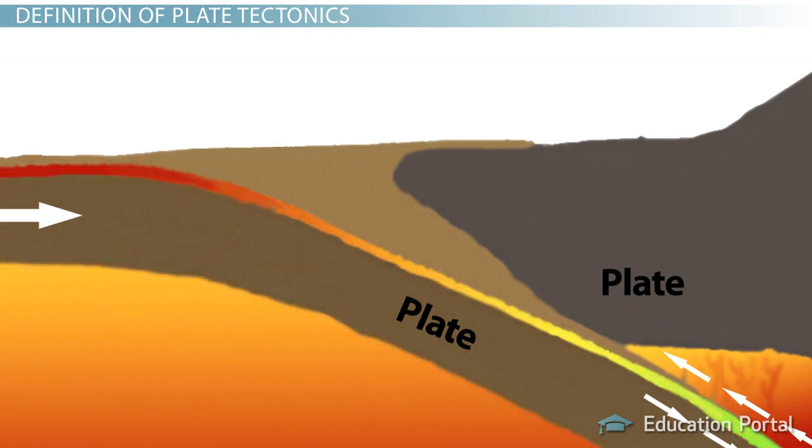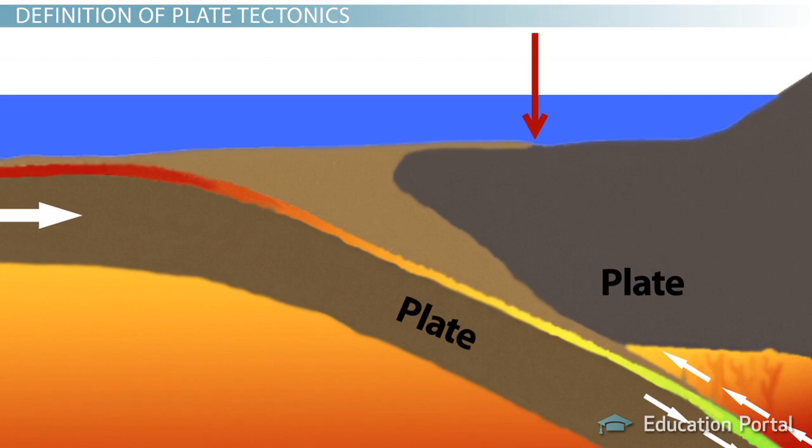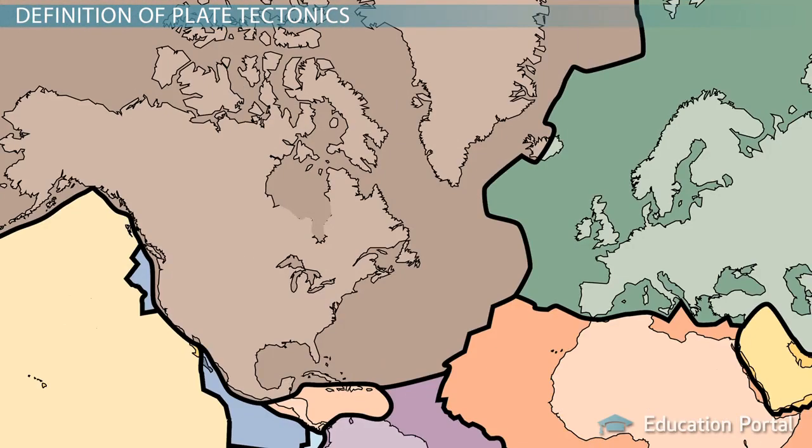Also, plate boundaries are not the same as continental boundaries as the edges of the plates can be underwater. For example, the North American plate extends from the middle of the Atlantic Ocean to the west coast of North America.